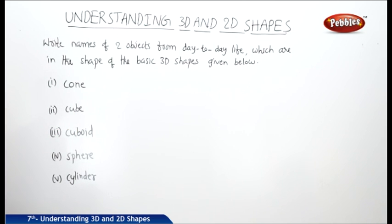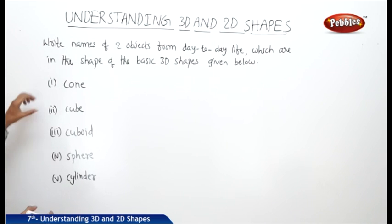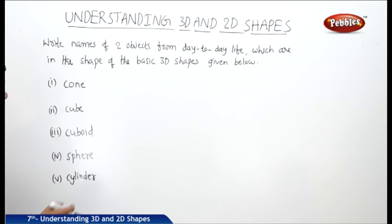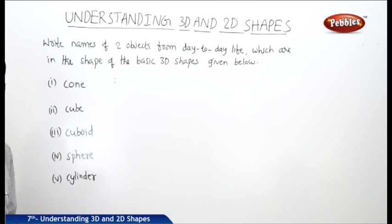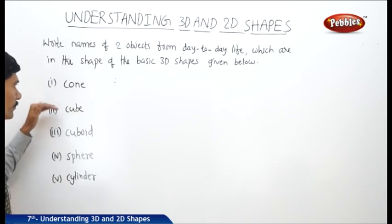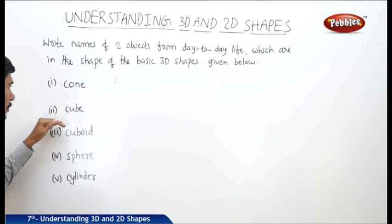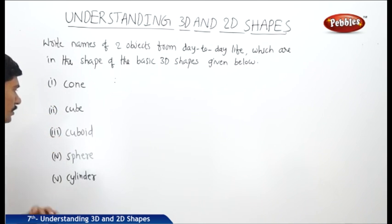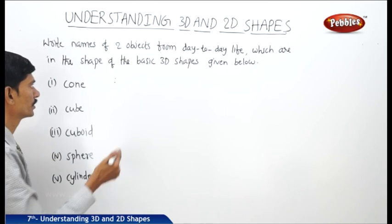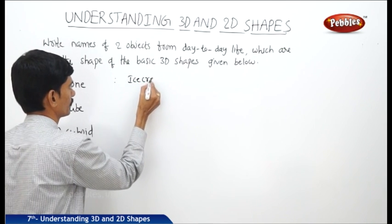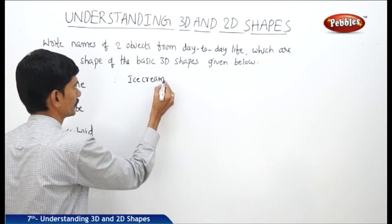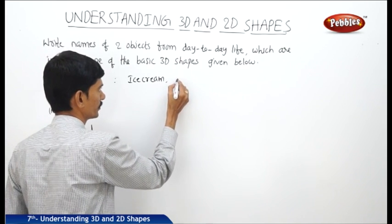Now let us solve a problem based on 2D and 3D shapes: write names of two objects from day-to-day life which are in the shape of the basic 3D shapes given below. The different shapes are cone, cube, cuboid, sphere, and cylinder. If we consider the cone, then we can take an ice cream cup and the upper part of a funnel.